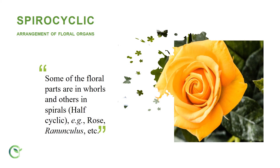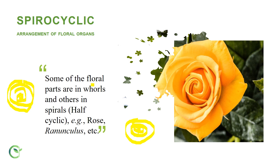In spirocyclic arrangement, some floral parts are arranged in whorl form — concentric patterns — while others are arranged in a spiral form at the center. It is also called half-cyclic. In the rose flower, the calyx is present in whorl form, but the inner floral parts are arranged in spiral form. The best examples are rose and Ranunculus.